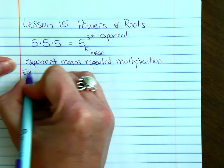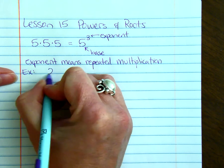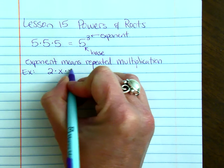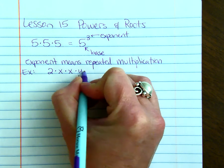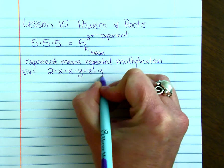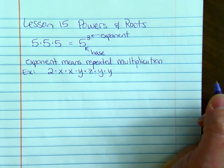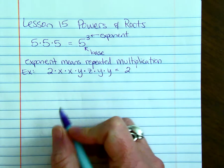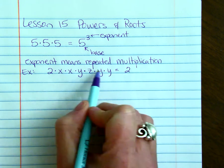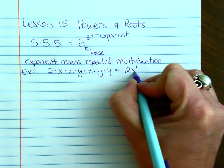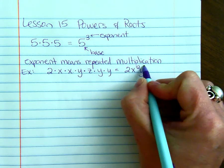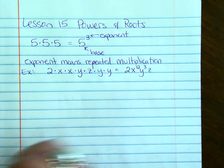For example, if we have 2·x·x·y·z·y·y, we write the 2 in front. We count the x's - there are 2, so it's x squared. Then y appears 3 times, so it's y cubed. The result is 2x²y³z.